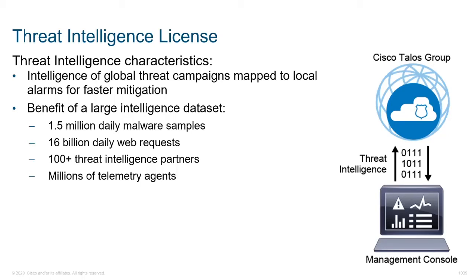We also have our threat intelligence license. If you aren't familiar with the Talos group, it is a global threat intelligence operation that allows us to look at a huge base of information constantly being updated. The numbers include 1.5 million daily malware samples, 16 billion daily web requests, 100-plus threat intelligence partners, and millions of telemetry agents. It's a constantly updated mechanism because there are constantly new types of malware being invented and deployed — this is what stays two steps ahead.